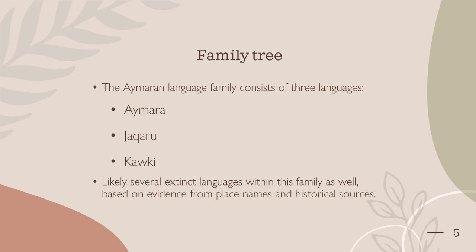There are currently three languages within the Aymaran family tree: Aymara, Jacare, and Cacchi. There are likely also several extinct languages within the family. This can be inferred from the names of various places in the surrounding area, as well as mentions of other languages in historical sources. These languages would have covered a wider area of southern and central Peru.